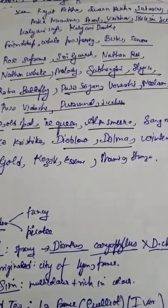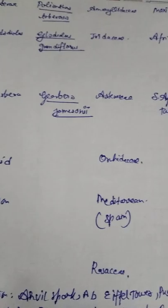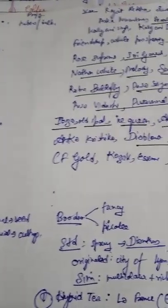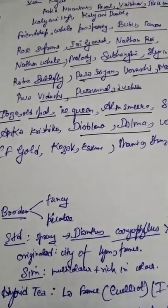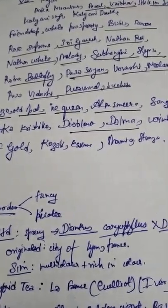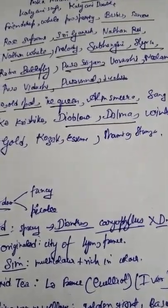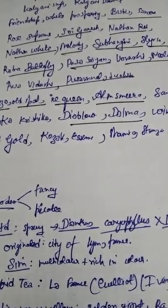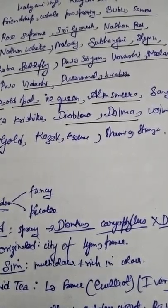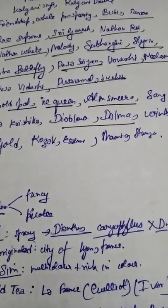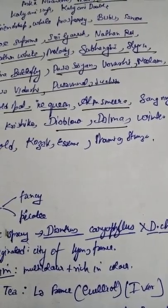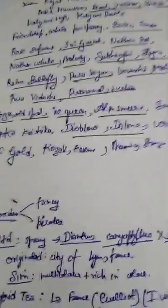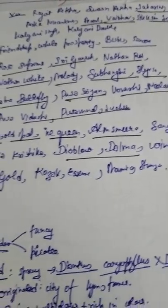Gladiolus scientific name is Gladiolus gandavensis. It belongs to family Iridaceae. Origin place of gladiolus is Africa. Important varieties include Friendship, White Prosperity, Bisbis, Rose Supreme, Shri Ganesh, Nathan Red, Nathan White, Melody, Subhangini, Ratna Butterfly, Pusa Srijan — the answer to the question. Pusa Srijan is an important variety of gladiolus. Also Urvashi and Neelam are important gladiolus varieties.